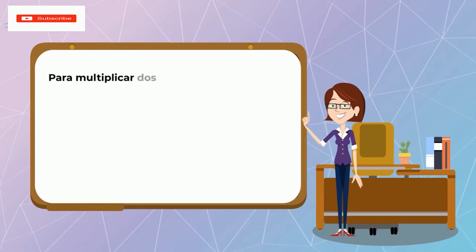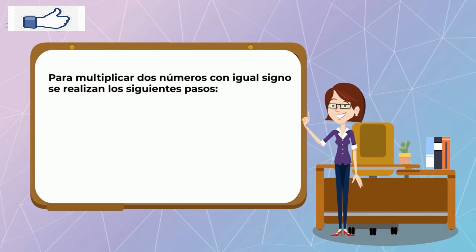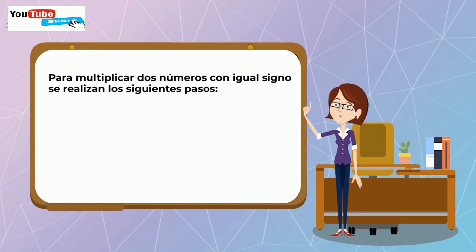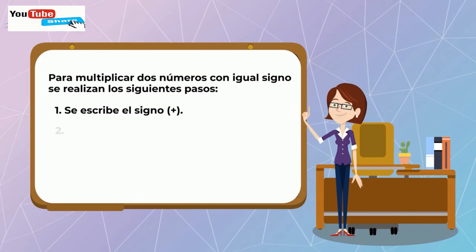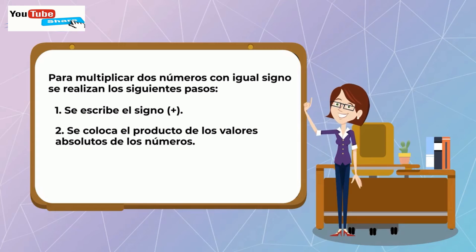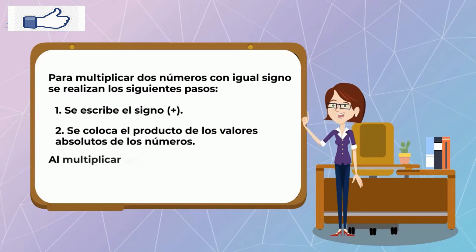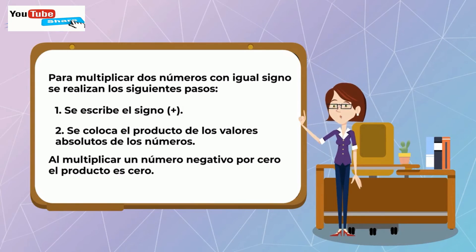En general, si multiplicamos dos números con igual signo, se realizan los siguientes pasos: 1. Se escribe el signo más. 2. Se coloca el producto de los valores absolutos de los números. Al multiplicar un número negativo por cero, el producto es cero.